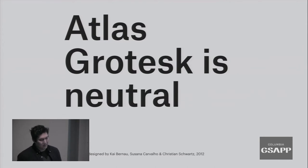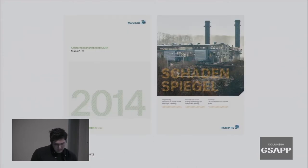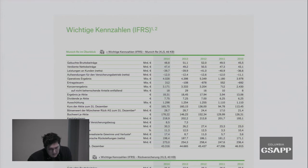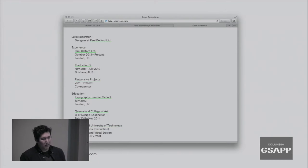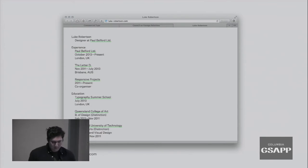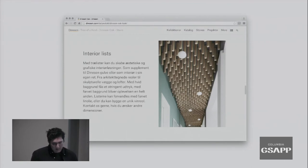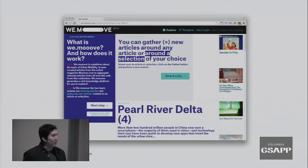Another typeface — Atlas Grotesque. It's extremely neutral and can be used in so many different situations, taking on different tones. For example, it can be very informational for a company that uses data-heavy reports. Atlas was actually made as a custom typeface for Munich RE Reports, and it saved them millions of dollars because it had a slightly tighter copy fit — you could actually save a lot of paper. But it can also be very straightforward for a personal website, very stripped back and plain, or a little more modern and clean, like for this Danish wood company.